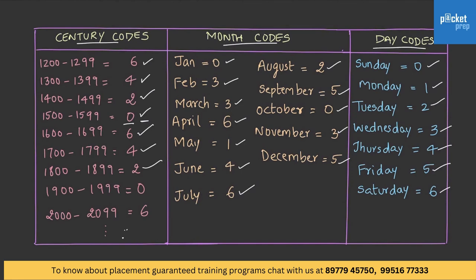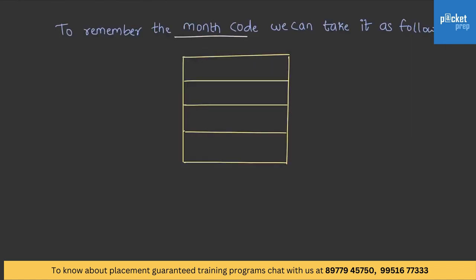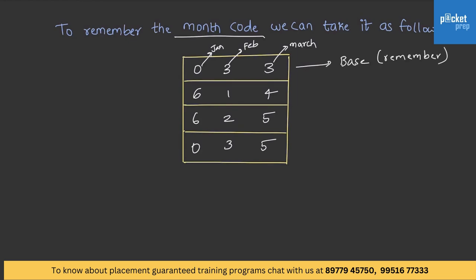Month codes can be hard to memorize, so here's a technique. Take the first three month codes as 0, 3, 3. Next, double them and write vertically as 6, 6, 0. Then write the number sequence 1, 2, 3, 4, 5 with the last as 5. So: January=0, February=3, March=3, April=6, May=1, June=4, July=6, August=2, September=5, October=0, November=3, December=5.